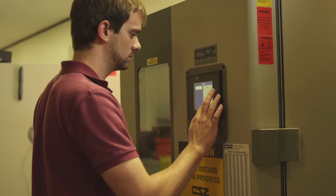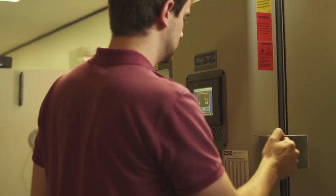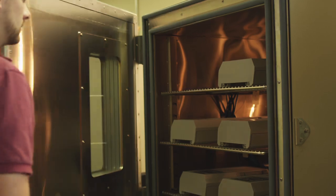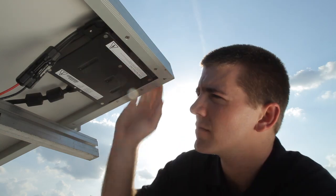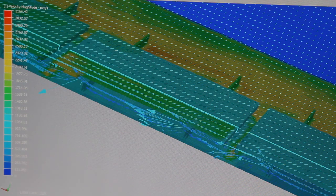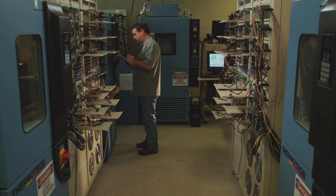SolarBridge does testing to identify weaknesses that we weren't able to identify in design. The most critical thing about any kind of test is that it's designed to replicate what that product will see in the actual use environment. We do testing like thermal cycling, humidity freeze, and damp heat. All those tests find unique sets of failure mechanisms.